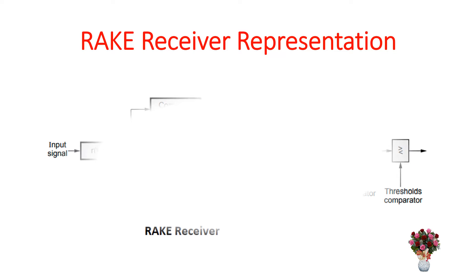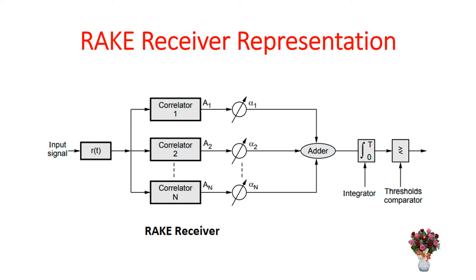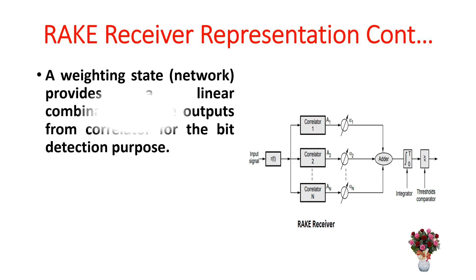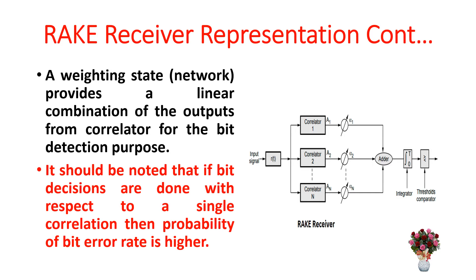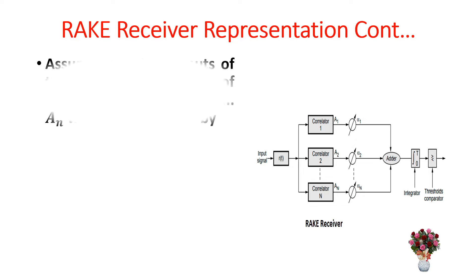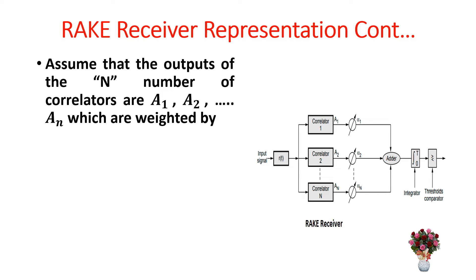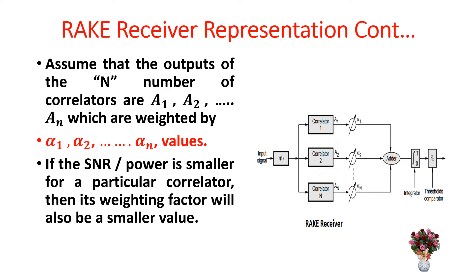The rake receiver representation is shown in this diagram. A weighting network provides a linear combination of the outputs from the correlators for bit detection. It should be noted that if bit decisions are done with respect to a single correlation, then the probability of bit error rate is higher. The outputs of the n correlators are a1, a2, up to an, which are weighted by alpha1, alpha2, up to alpha-n values. If the SNR or power is smaller for a particular correlator, then its weighting factor will also be a smaller value.